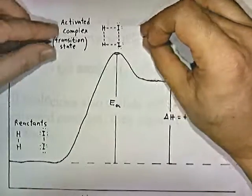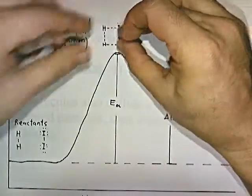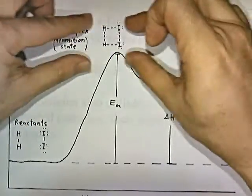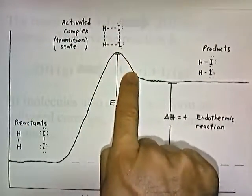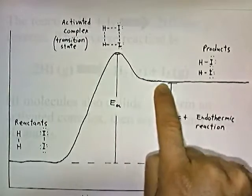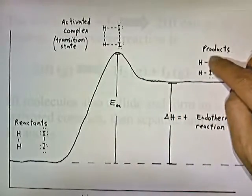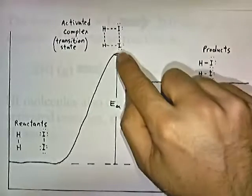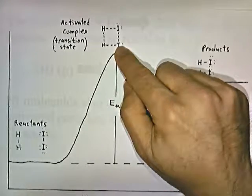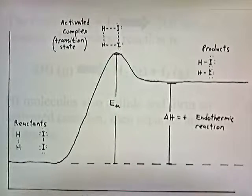After the molecules crash into each other and old bonds break and new bonds form, they move apart and potential energy goes down. At the peak of the energy curve is the activated complex — a transitional state between reactant and product where old bonds are partially broken and new bonds are partially formed.